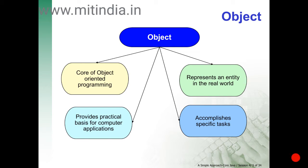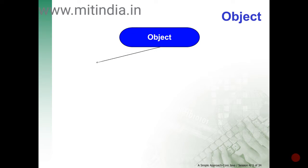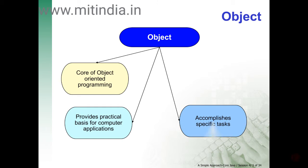Objects are the core of object-oriented programming. An object contains these characteristics: the object represents the core and provides the practical basis to represent an entity and accomplish specific tasks.